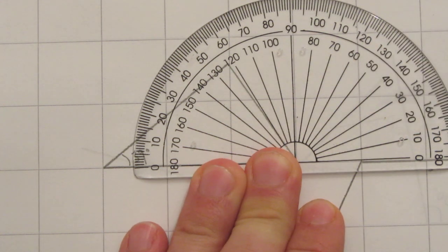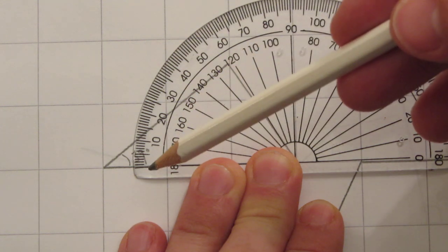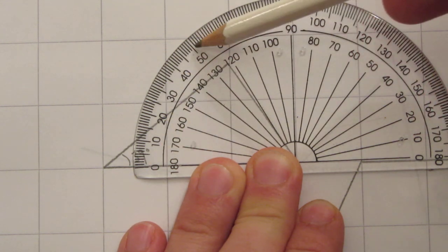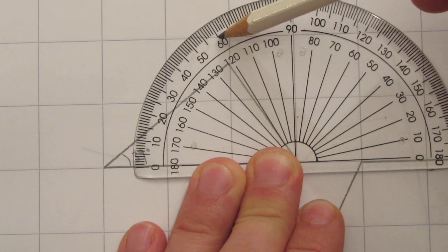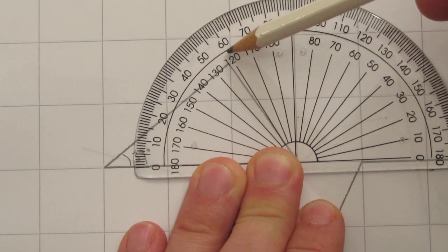Right up to a line just before the 120, which is the same as the 60. So that looks to me about 57 degrees. Difficult to be very precise.